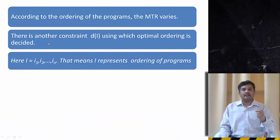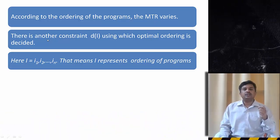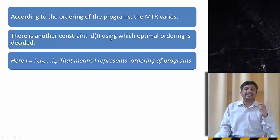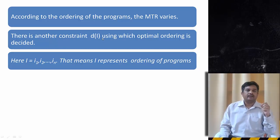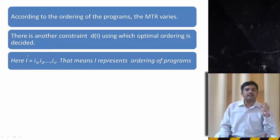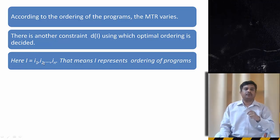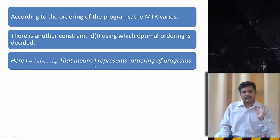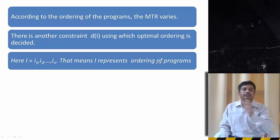There is another constant, that is d(i), using which the optimal ordering is decided. So here let us say i is i1, i2, in. It means i represents the order of the program, in which order I need to keep the program.